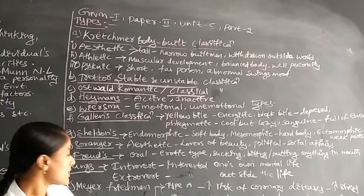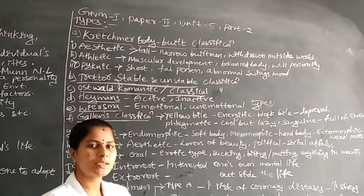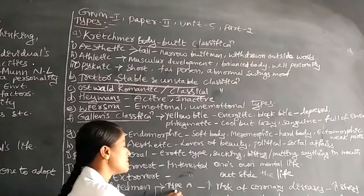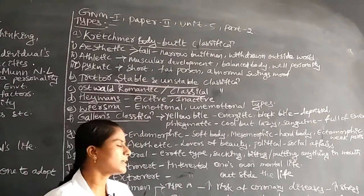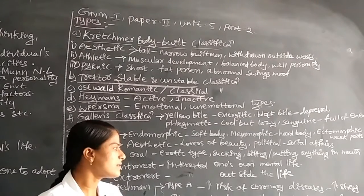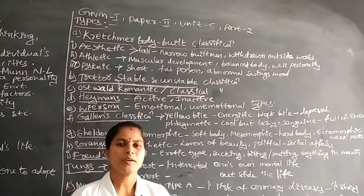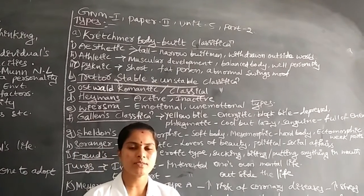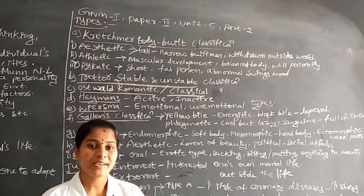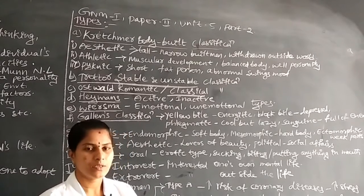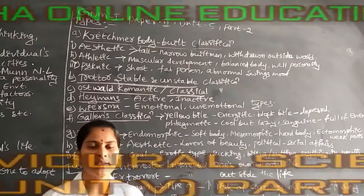Next is Meyer-Friedman's classification. There are two types: Type A personality and Type B personality. In Type A personality, there is increased risk for coronary heart disease, because these individuals have increased stress. That is why Type A personality people may be prone to get heart diseases.